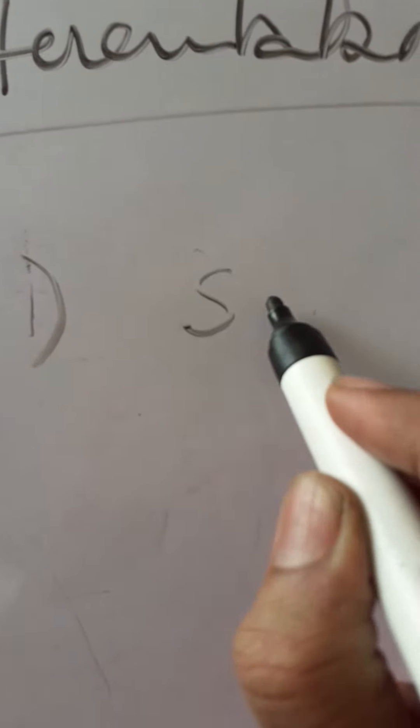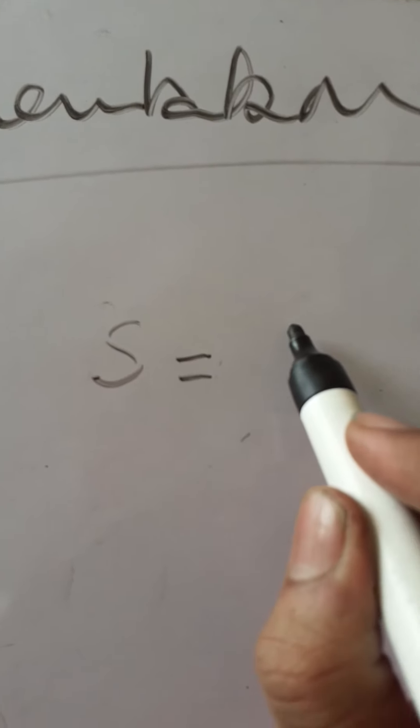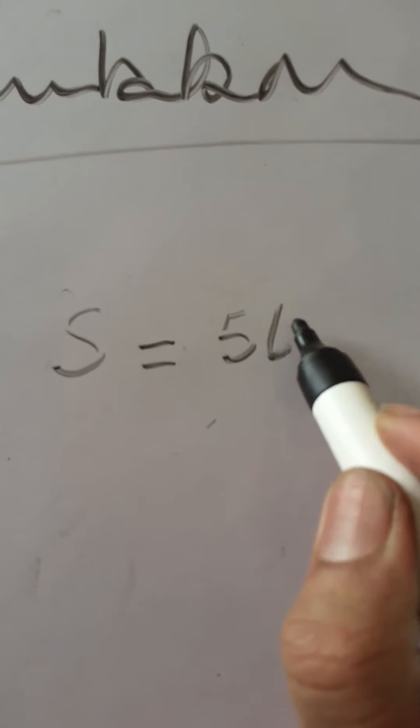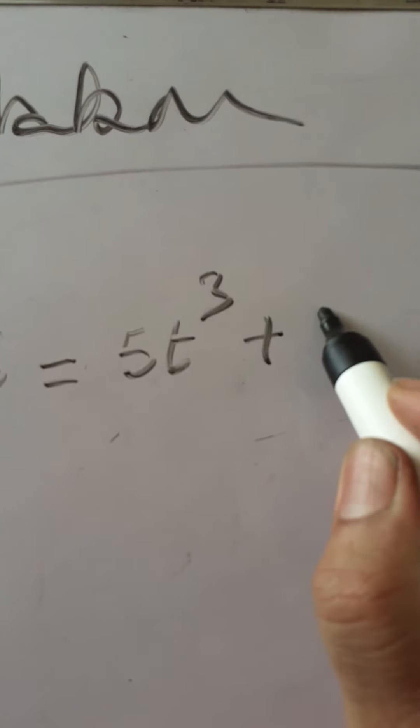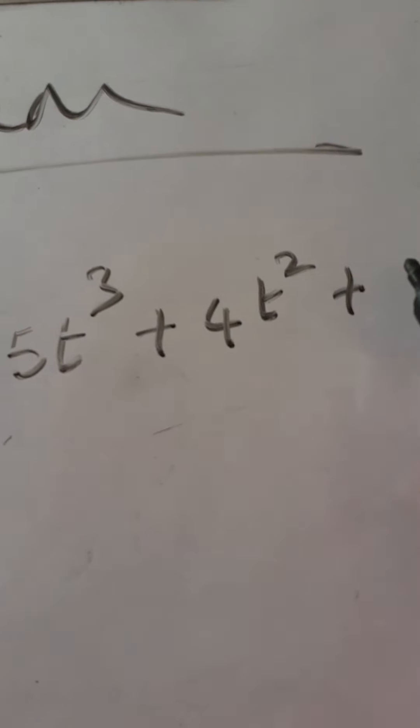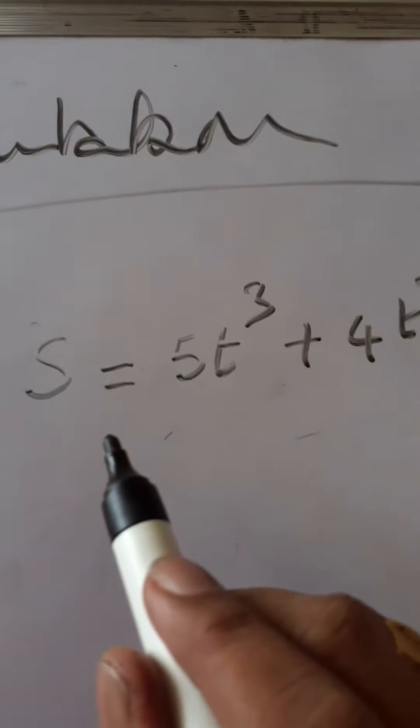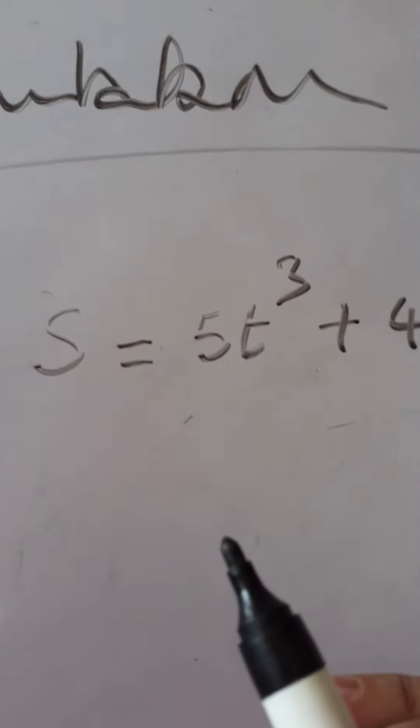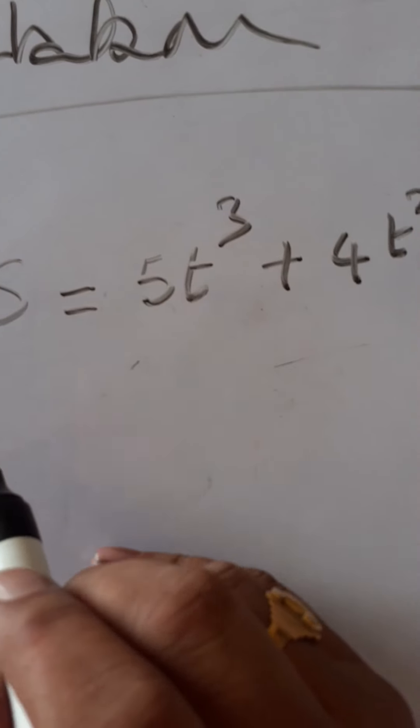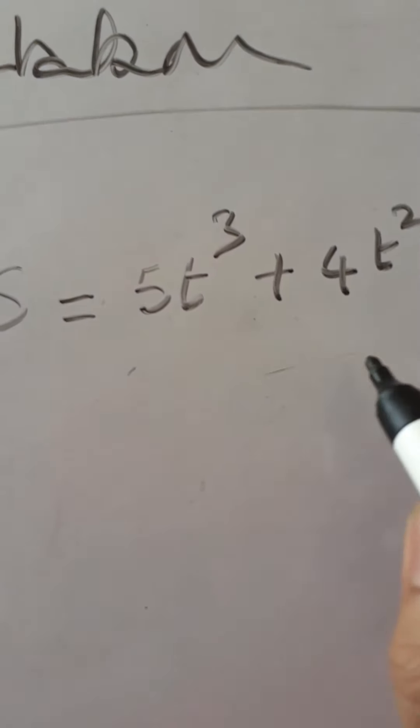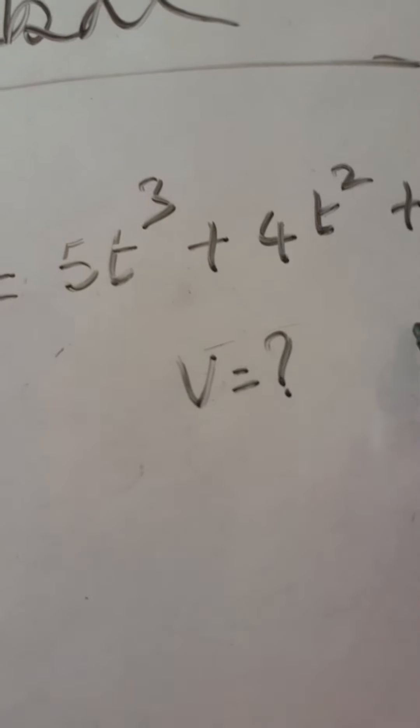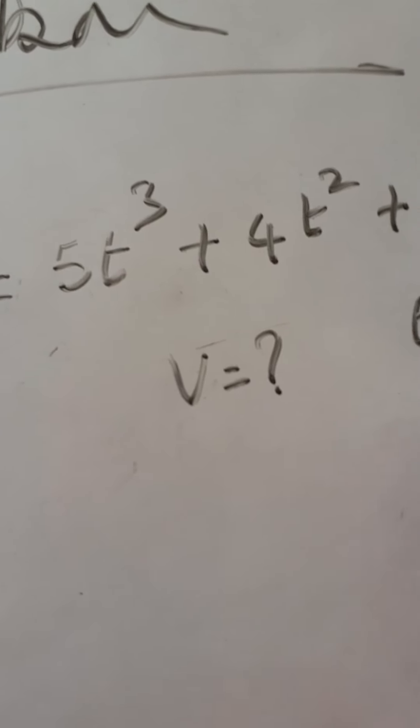Where we use the differentiation in physics. First example: Displacement of the particle S is equal to 5t cube plus 4t square plus 4t plus 5. Like that displacement is variable with time. Find the velocity of the body after 2 seconds. Velocity after t is 2 seconds.